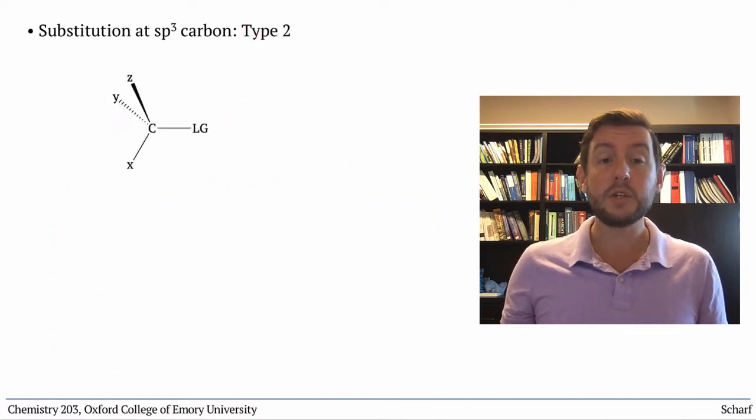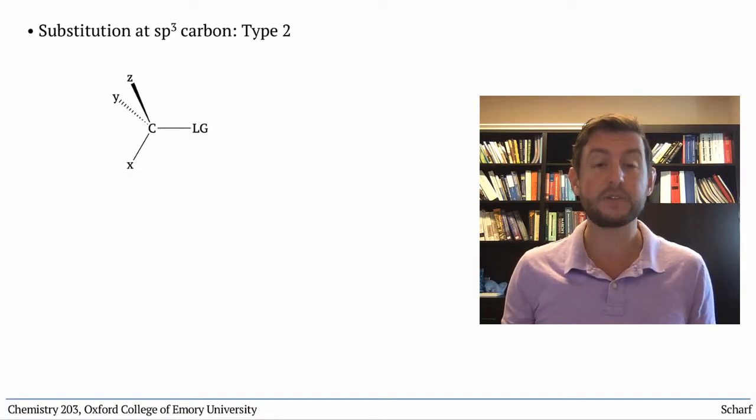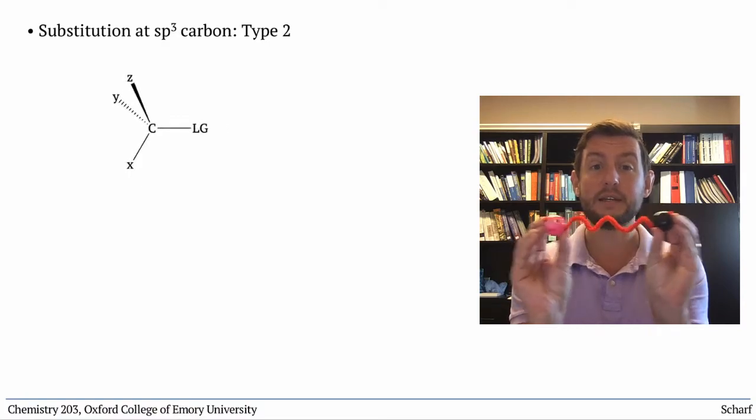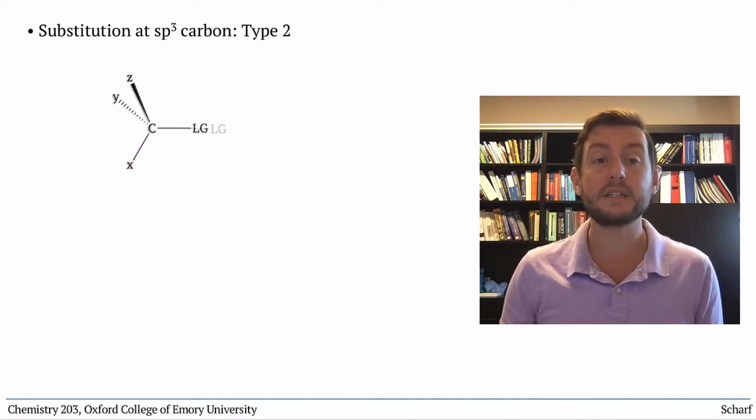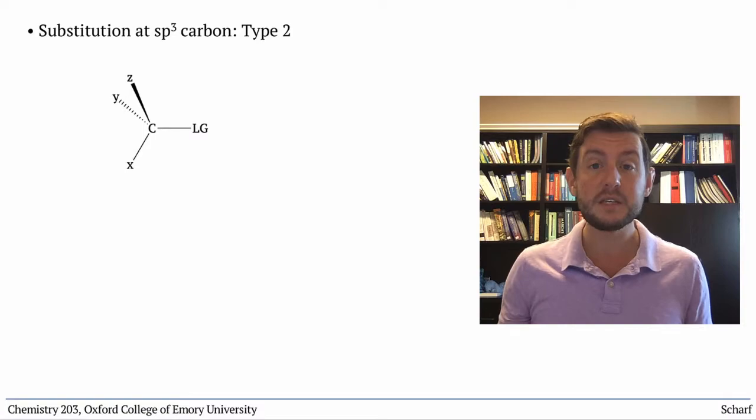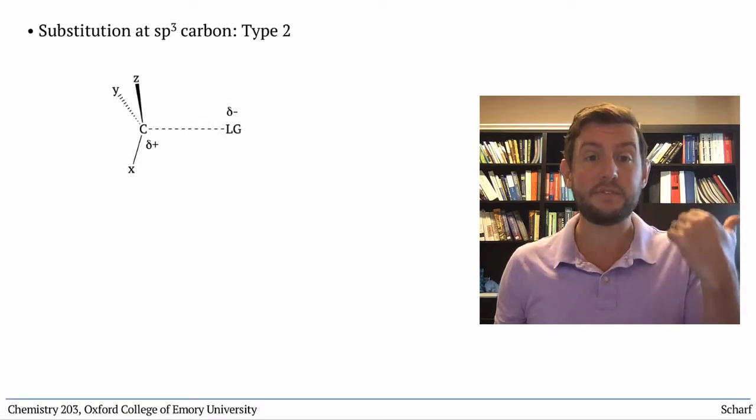Another sort of substitution is also possible. If you recall your recent lessons from Lab about IR spectroscopy, you'll remember that bonds vibrate. If a bond is relatively weak, as is the case for the bonds between carbon and good leaving groups, sometimes these vibrations are strong enough to just pop off the leaving group.